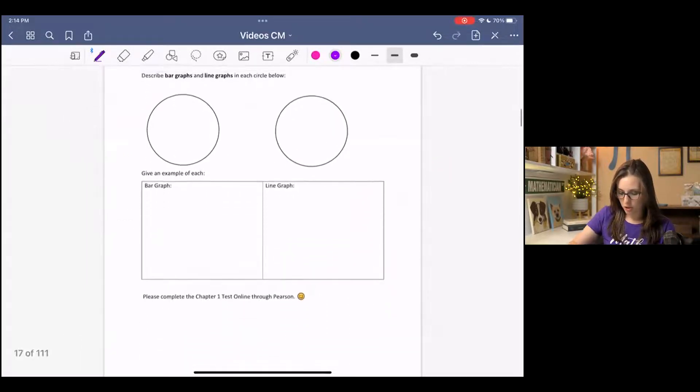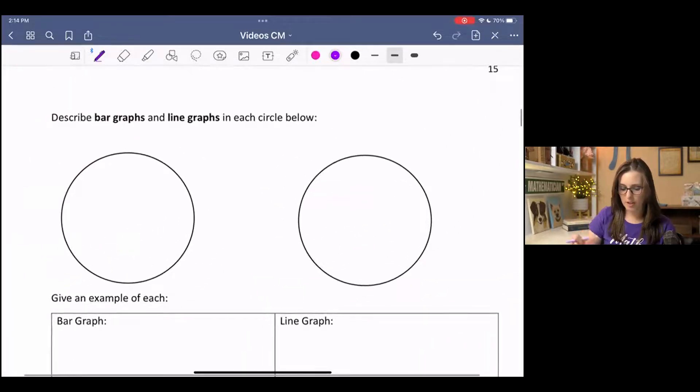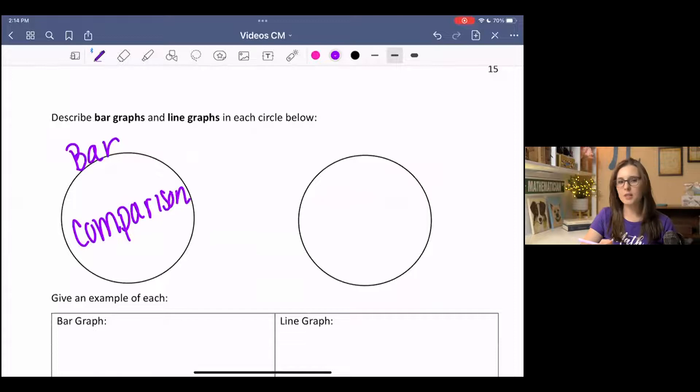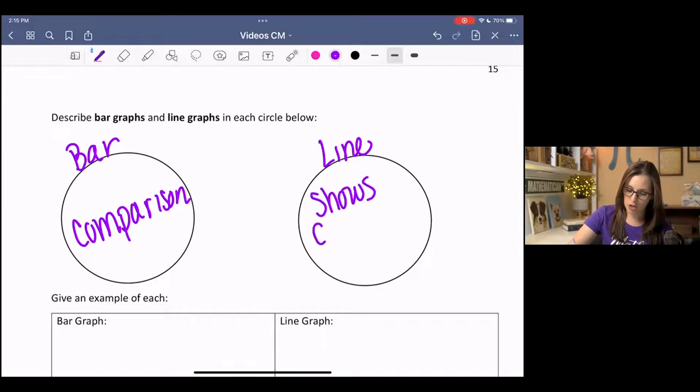And then two other types of graphs that we're going to look at today. One is a bar graph, and one is a line graph. A bar graph is used for comparison. And I'm sure you've seen these. They're just literal bars along an axis, and they just compare the frequency of some items. And then a line graph shows change over time.